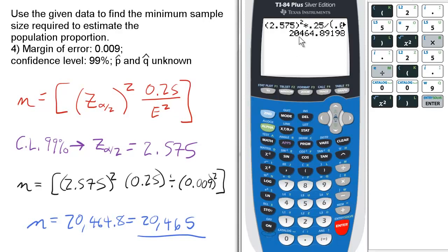The number it calculates is 20,464.89. You want to round that up to the nearest integer value, which is 20,465 for your value of n, for the sample size.